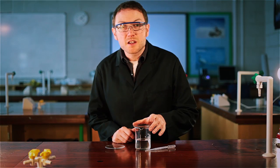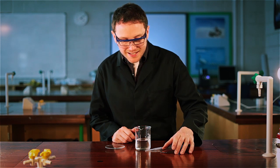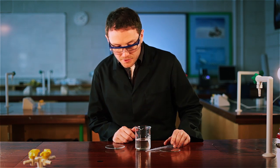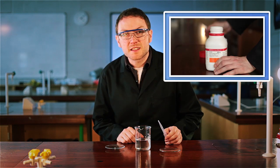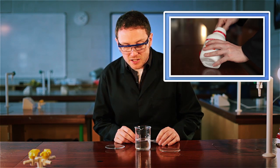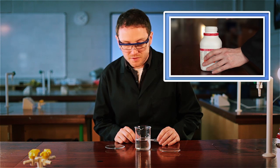So here's my original supersaturated solution of sodium acetate, or sodium ethanoate if you prefer. And I made this by getting 125 grams of the sodium acetate and then heating that gently over a Bunsen with 12.5 grams of water.